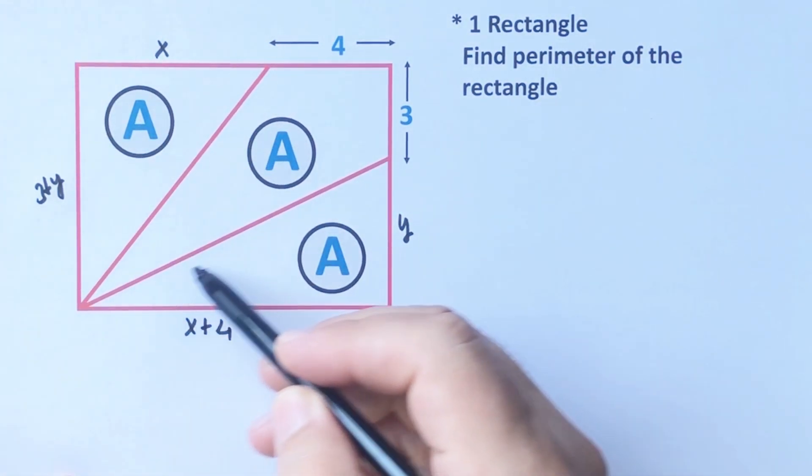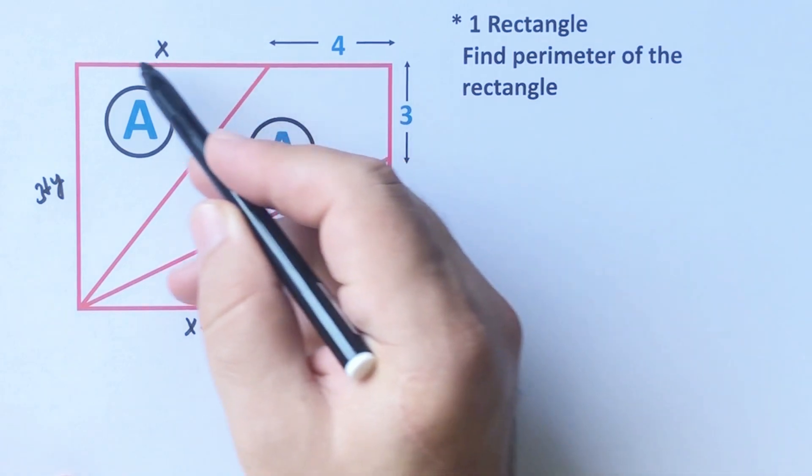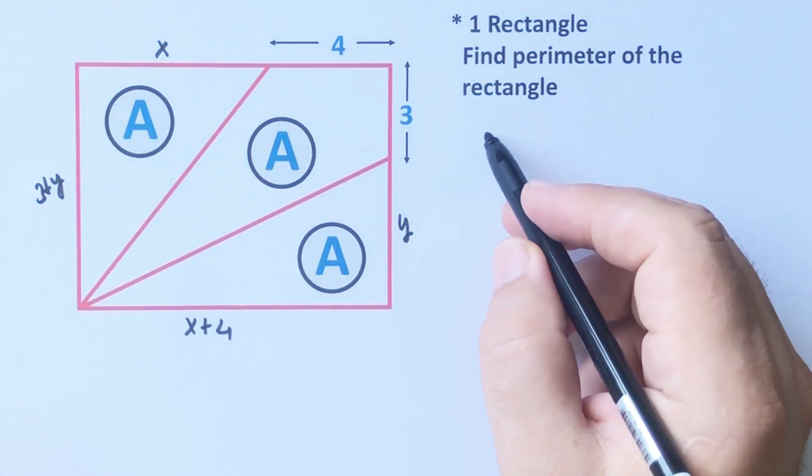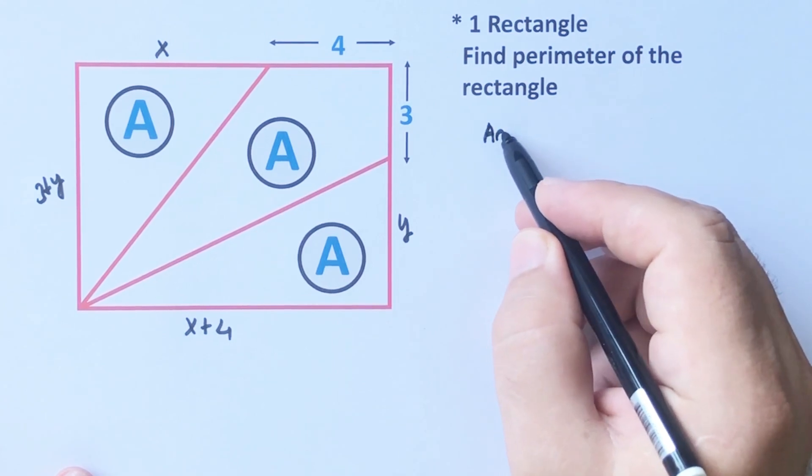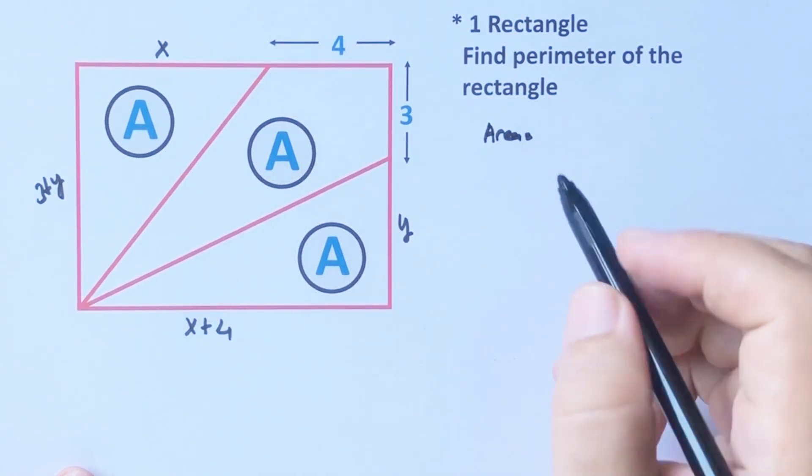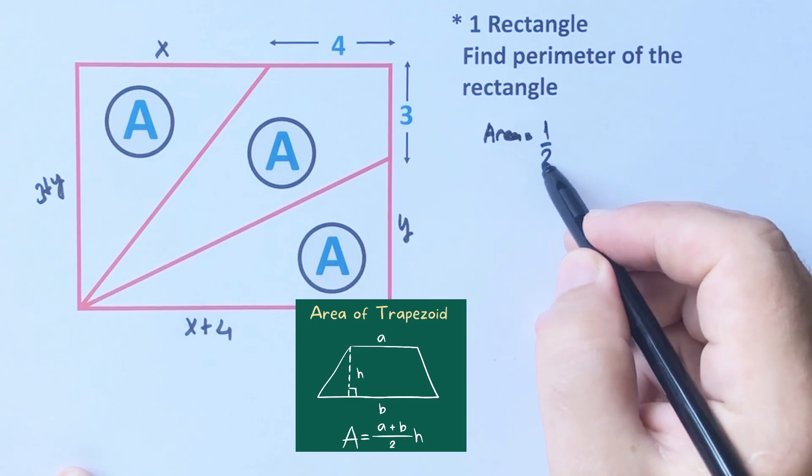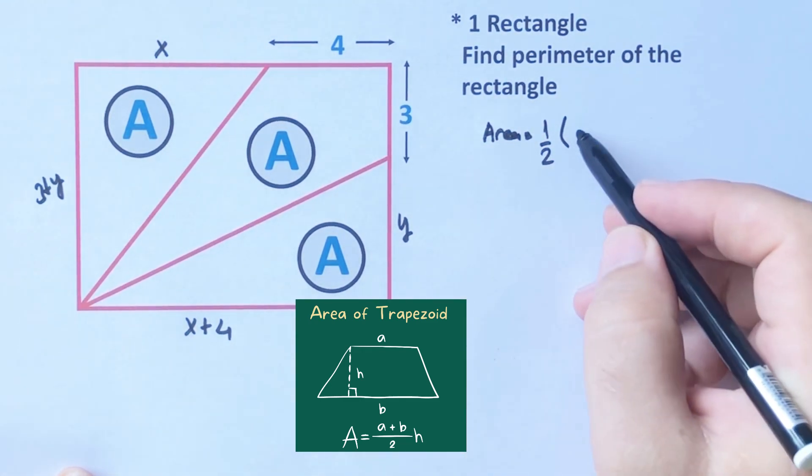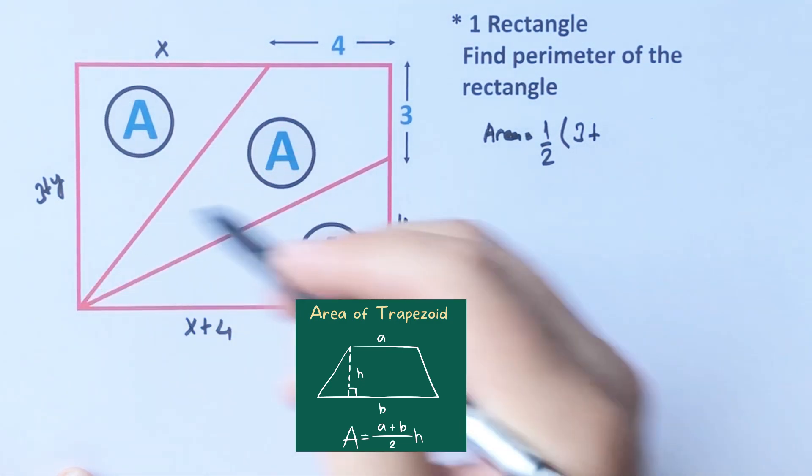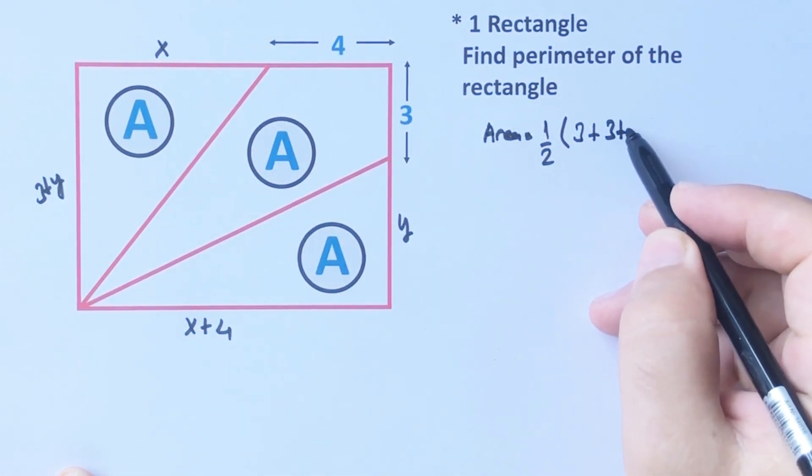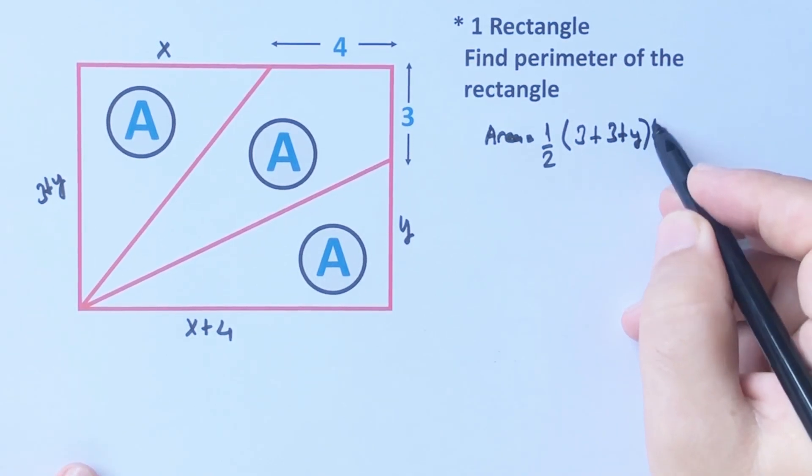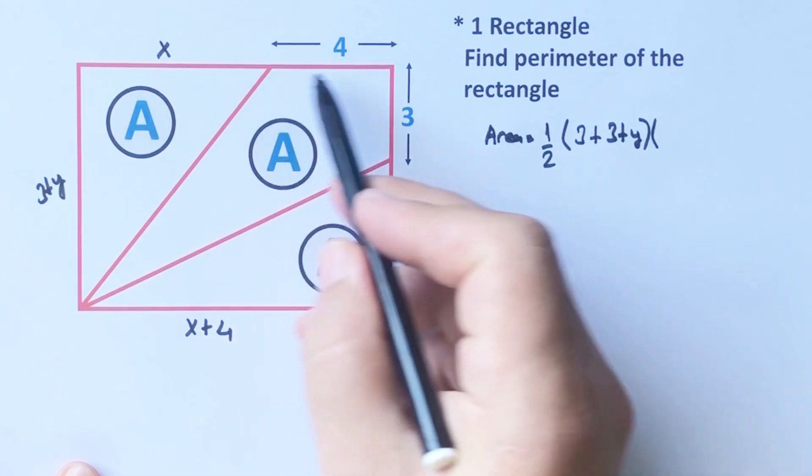If you notice that this quadrilateral is a trapezoid, so the area of this trapezoid equals one over two times three plus three plus y times height. The height is x plus four.